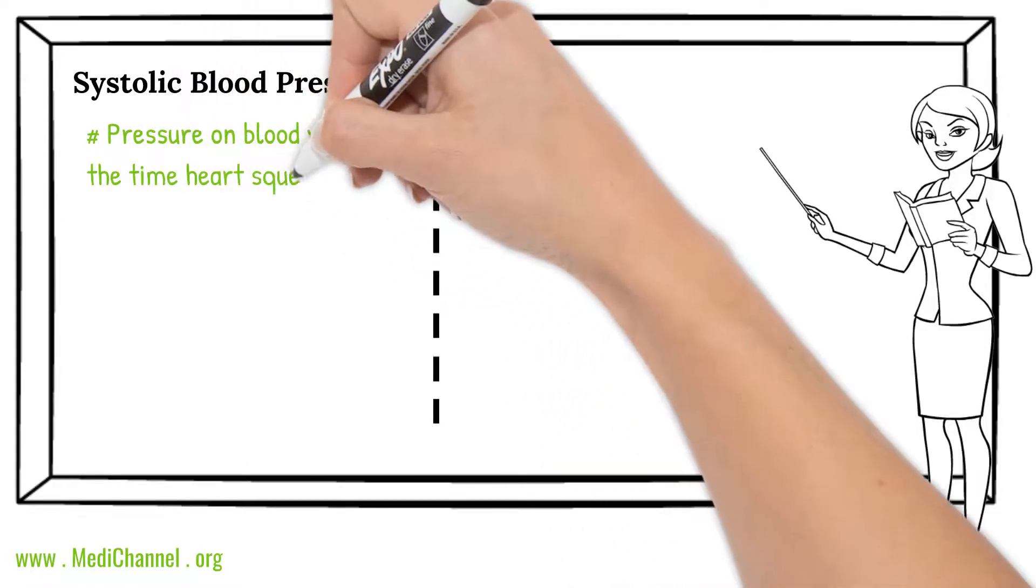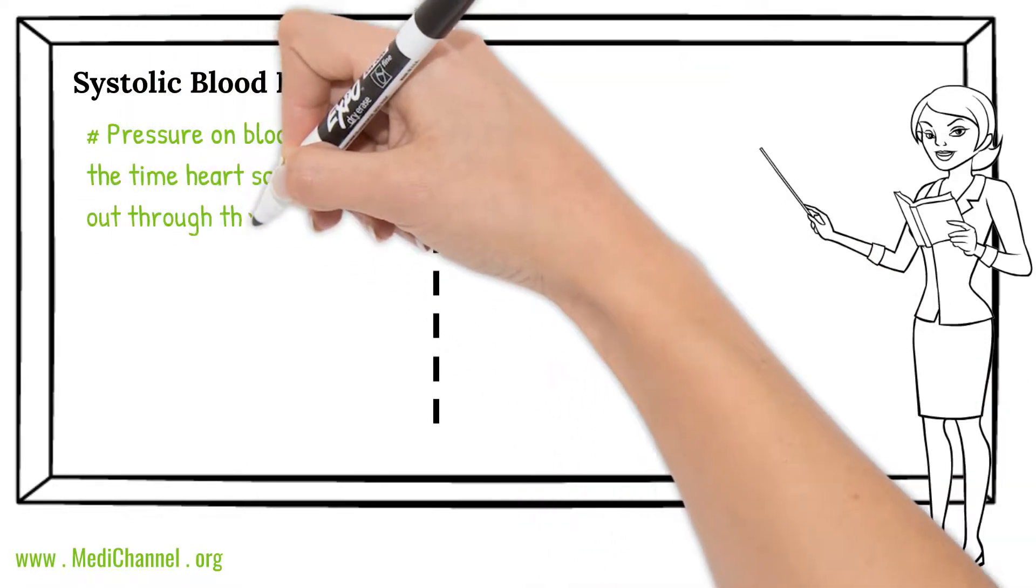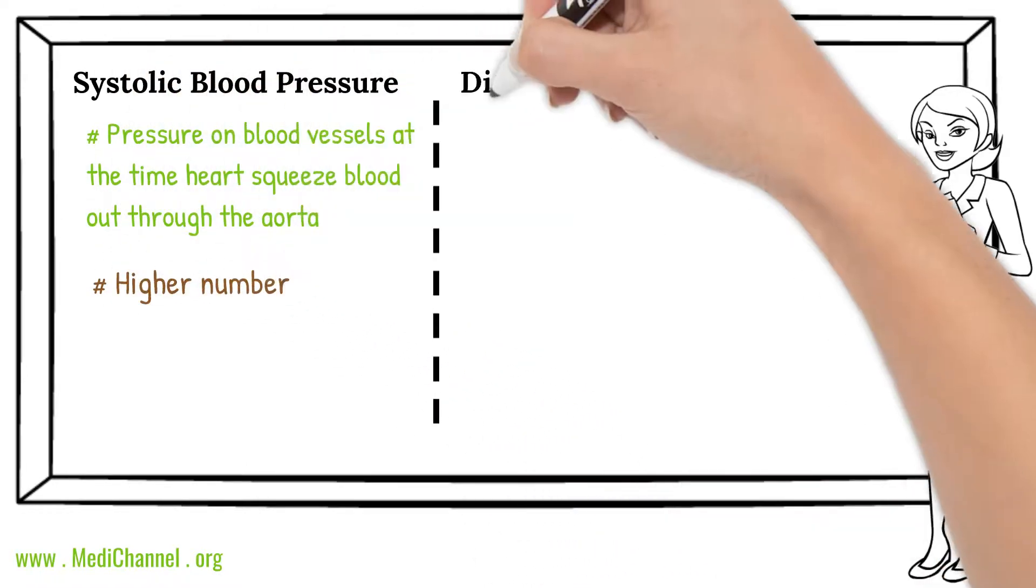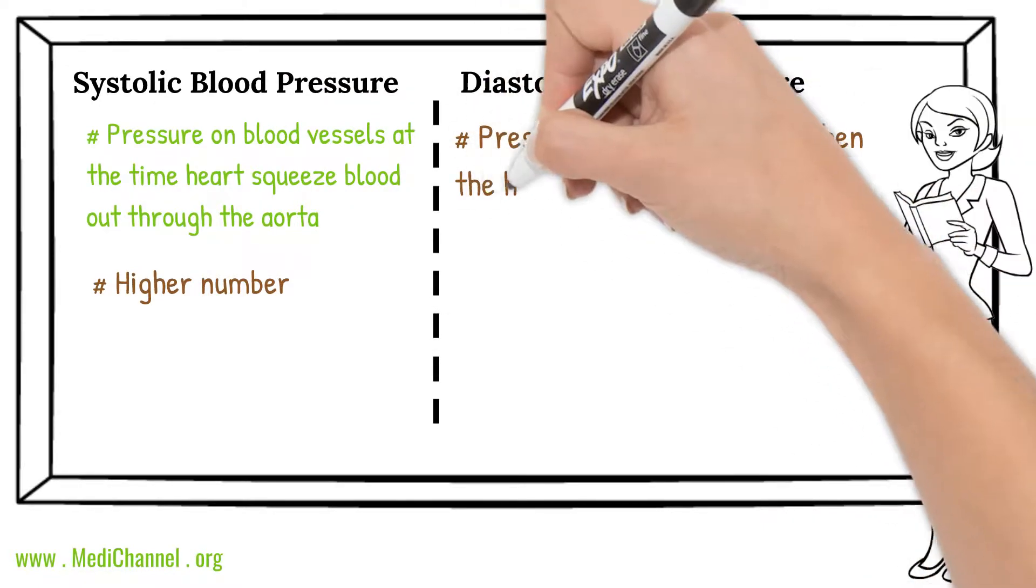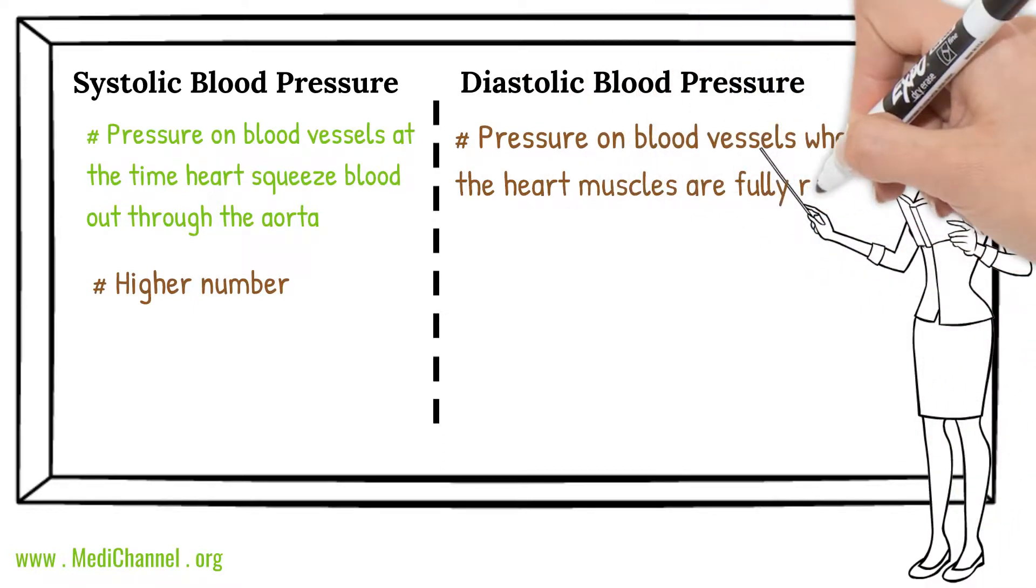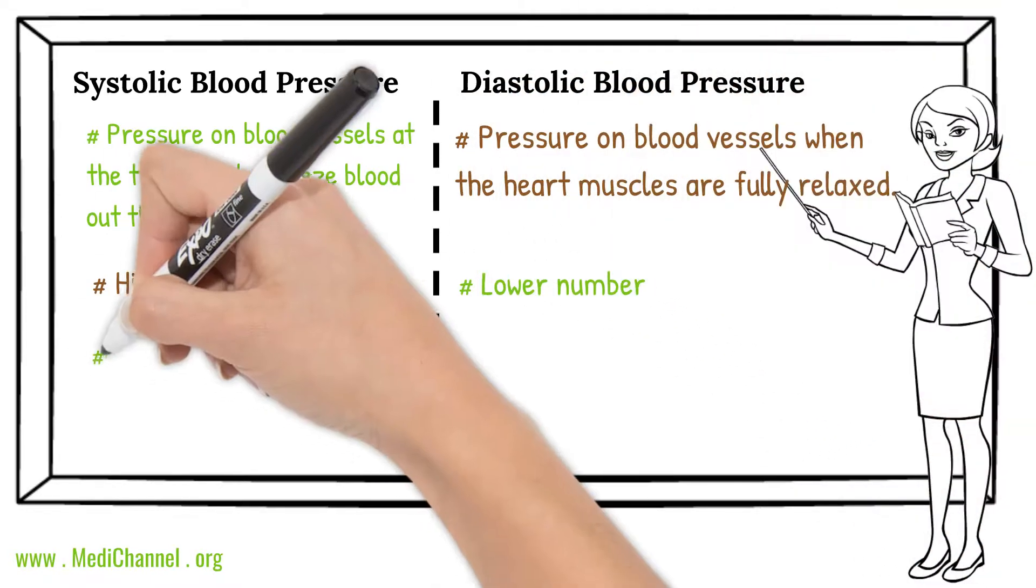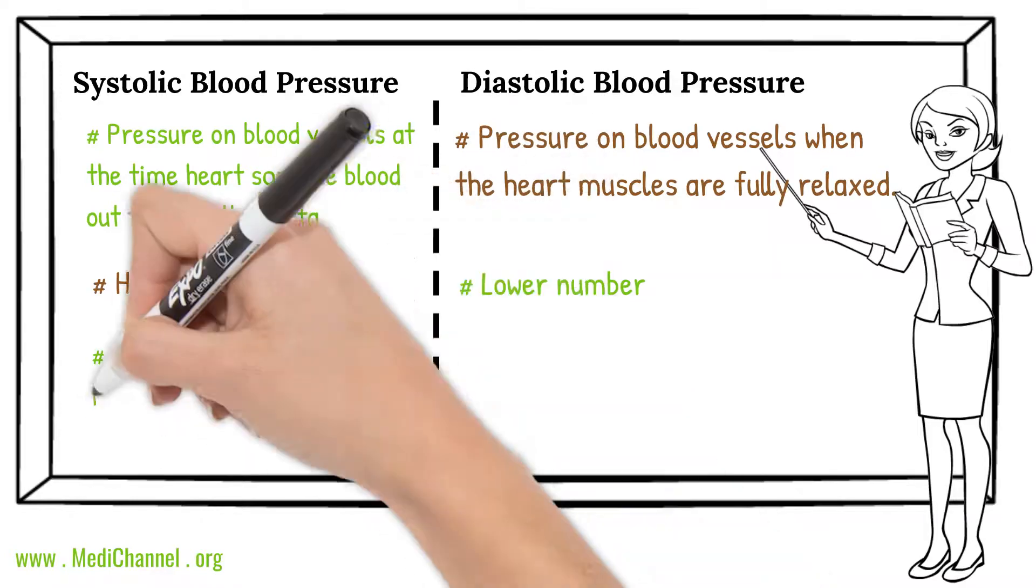In a healthy person, the systolic blood pressure should remain under 120 mmHg, and diastolic pressure under 80 mmHg. When your blood pressure jumps above 120 over 80, that is referred to as elevated blood pressure or high blood pressure.